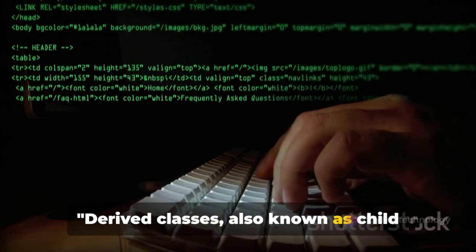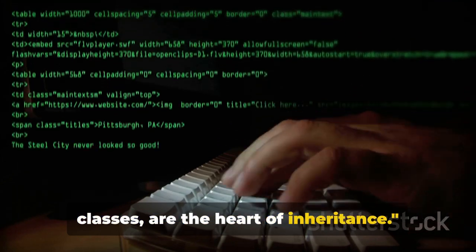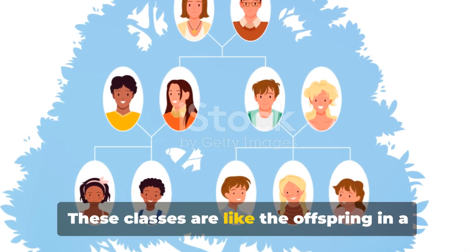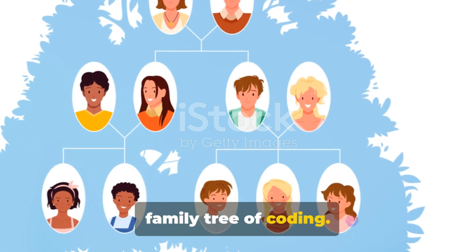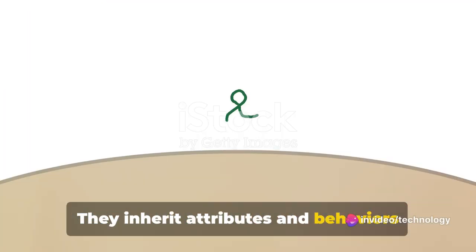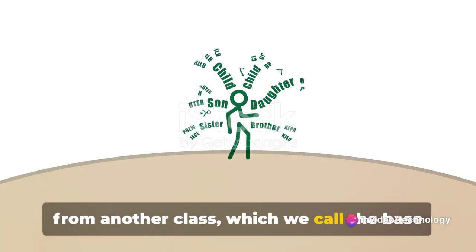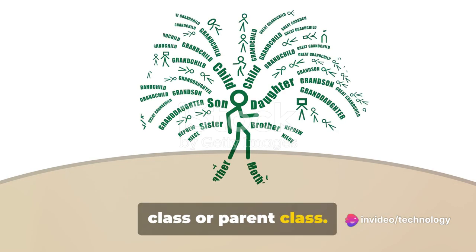Derived classes, also known as child classes, are the heart of inheritance. These classes are like the offspring in a family tree of coding. They inherit attributes and behaviors from another class, which we call the base class or parent class.